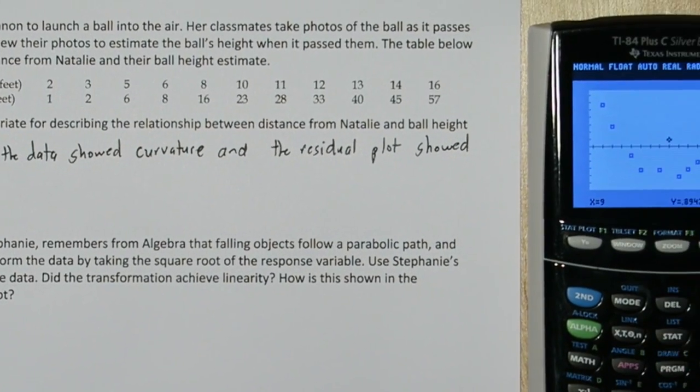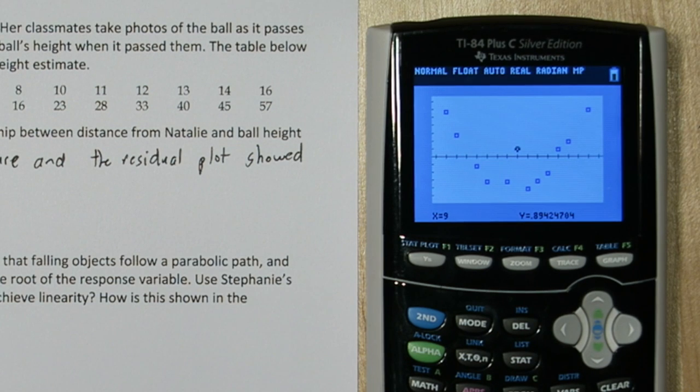Let's take another look at our residual plot. Because there's a pattern in our residual plot, it suggests we can come up with a better model for predicting the ball's height from the distance from Natalie.